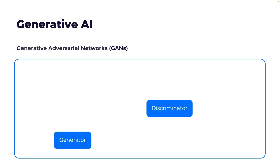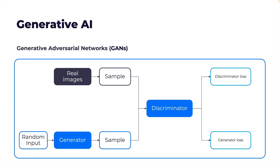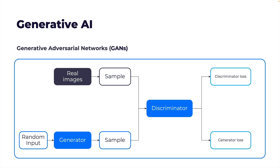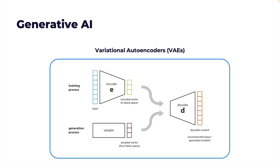GANs comprise two networks: a generator and a discriminator. The generator tries to produce fake data, while the discriminator tries to distinguish between real data and the fakes. Over time, the generator gets so good that the discriminator cannot tell real from fake. VAEs, or Variational Autoencoders, work by encoding data into a lower-dimensional space and then decoding it back. They ensure that the encoded data is close to the original, and during this process they can generate new similar data.